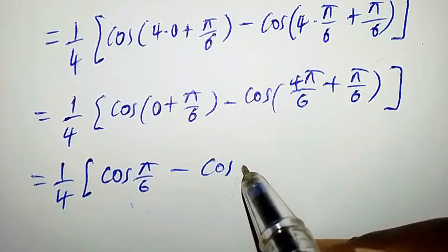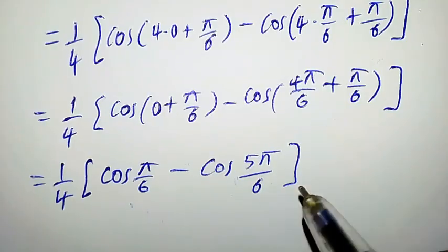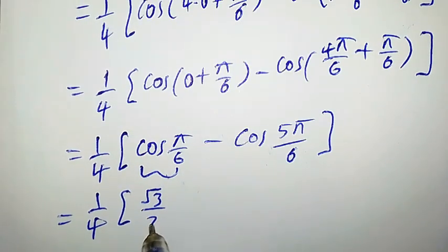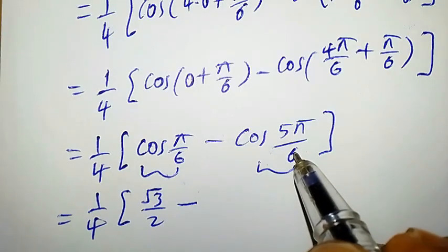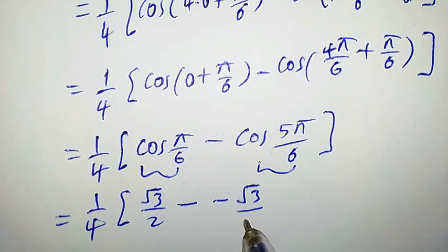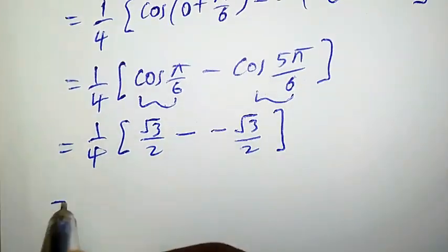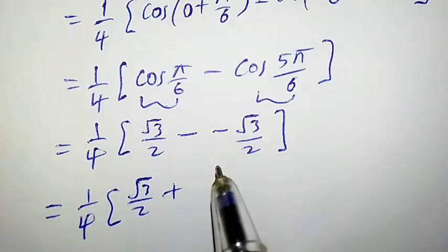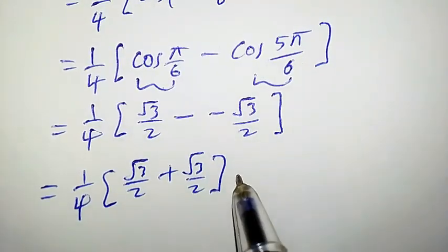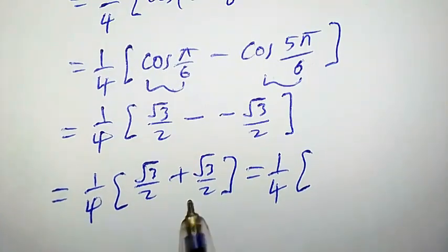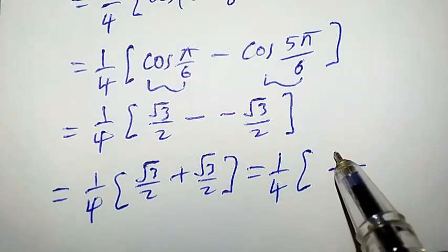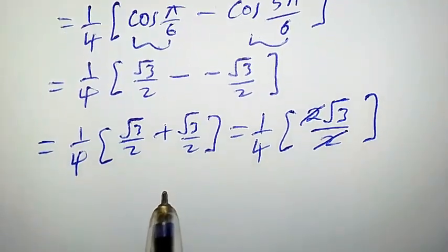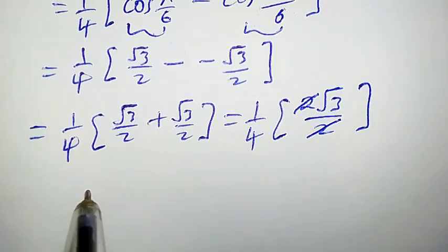This equals (1/4) times [cos(π/6) minus cos(5π/6)]. Now cos(π/6) = √3/2, and cos(5π/6) = −√3/2. So we have (1/4) times [√3/2 − (−√3/2)], which gives (1/4) times (2√3/2). Simplifying, 2 cancels 2, leaving (1/4) times √3.